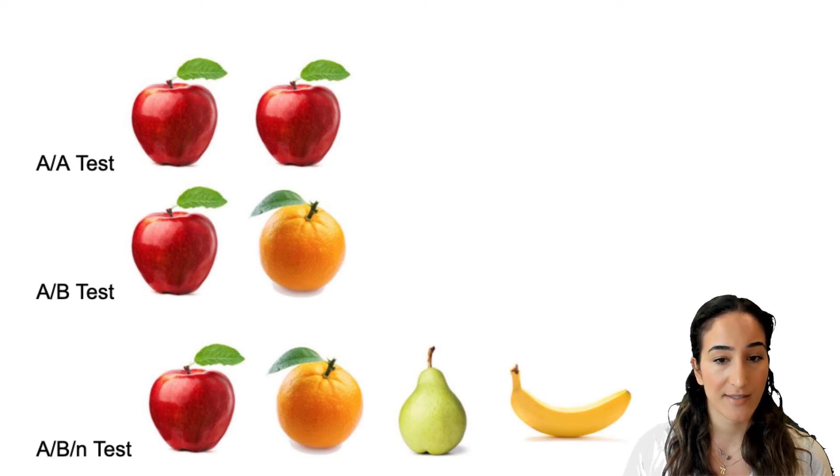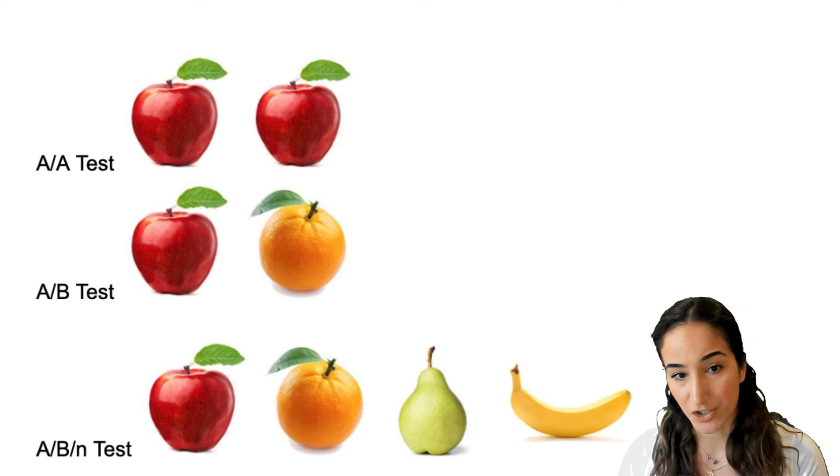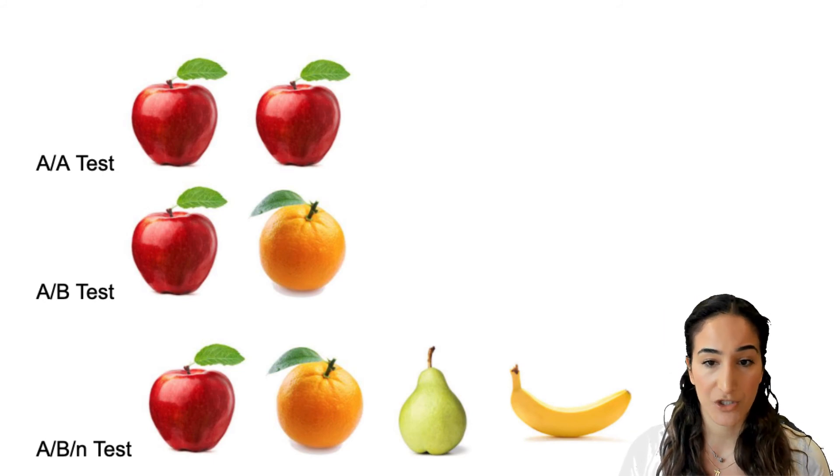So we have A-A testing which is two identical versions, A-B testing where you have two different versions, and A-B-N where you have more than two versions.